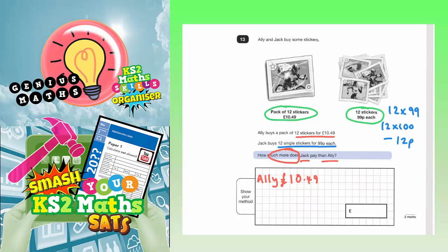So 12 times 100 for Jack would be 1,200 pence, or in other words, £12. But remember, it wasn't 100 pence each, it was 99 pence each.